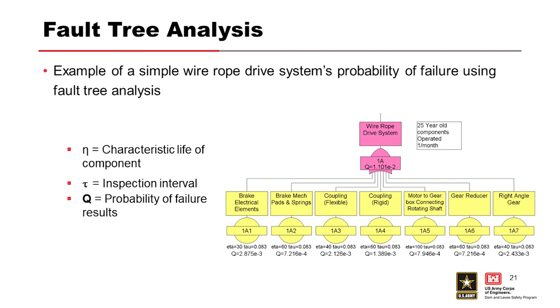So we use those gates, as I mentioned, in fault tree analysis. Here's an example of a simple wire rope drive system's probability failure using fault tree analysis. So the wire rope drive system depends on several components there. The brakes, the brake pads and springs, couplings, motor, gear reducer, a couple of different types of gear reducer there.